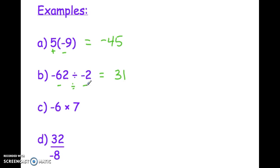We have -6 times 7. That is -42. Again, we have different signs. We have a negative and a positive, so we have a negative answer.